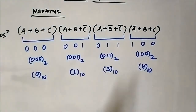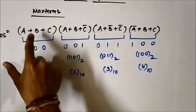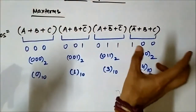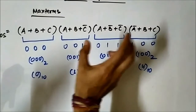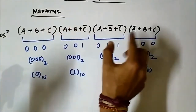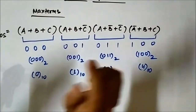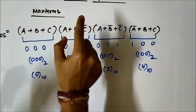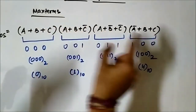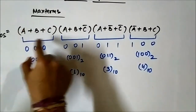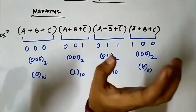This expression consists of several max terms AND-ed together — it is a product of sums, a product of max terms. It is also in standard form because all the variables are present in each and every max term. No variable is missing.